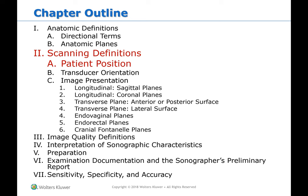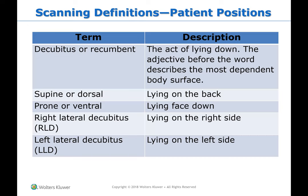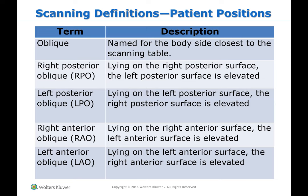Now let's talk about scanning definitions and patient position. Decubitus is the act of lying down, and the adjective before the word describes the most dependent body surface. Supine is lying on the back. Prone is lying face down. Right lateral decubitus is lying on the right side, and left lateral decubitus is lying on the left side. You can also put a patient in oblique. I scan in pretty much all of these positions — the only one I rarely use is prone.